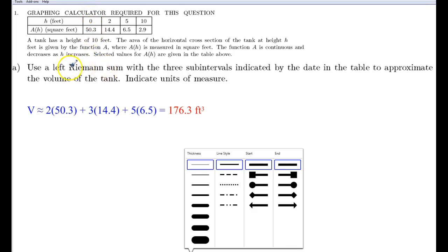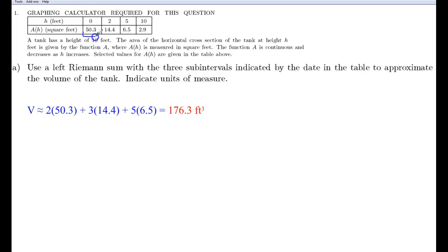For the left Riemann sum, so we have an interval here, and then we're going to have an interval like this, and then we're going to have the last interval. So we're always going to take the left-hand value, and since the function is always decreasing, the left-hand value is going to be the greater value. So here we go. We take the interval width, which in the first interval is 2, we multiply it times the left-hand value, which is 50.3. The second interval, the width is 3 units, we multiply that by the left-hand value, which is 14.4. And then the third interval is, from 5 to 10, is 5 units for the interval width, multiplied by the left-hand value, 6.5. We do all that multiplying, add them up, we get 176.3 cubic feet.